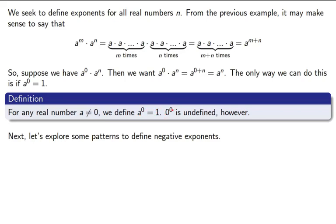Now, we don't define 0 to the 0. That's a strange thing. Because 0 to any power should be 0. But, anything to the 0 power should be 1. So, since it's not clear which, we just leave that undefined, kind of like division by 0.